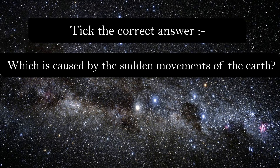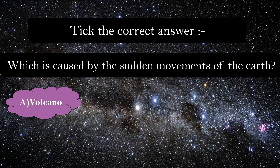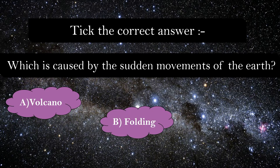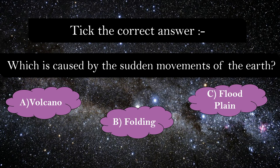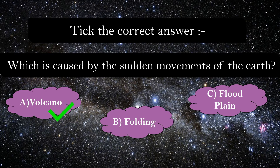Which is caused by sudden movement of the earth — volcano, folding, or floodplains? Floodplains are caused due to deposition. Folding is a process of making mountains — folds are created during erosion and deposition, forming fold mountains. Thus, the correct answer is volcano.